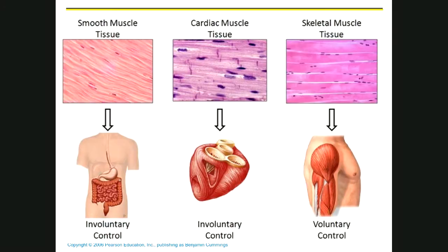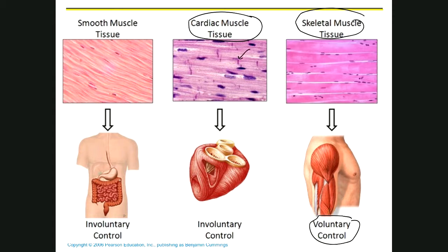So those are the three types of muscle. Skeletal looks like this — you find it in skeletal muscles, and it's voluntary. Here's cardiac — remember there are the little intercalated discs, you only find it in the heart, and it's involuntary. And then here's smooth muscle — these tapered, canoe-shaped cells found on the walls of hollow organs, also involuntary.